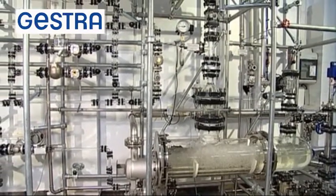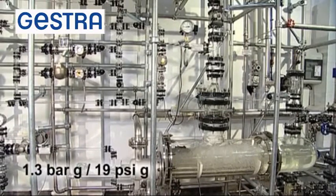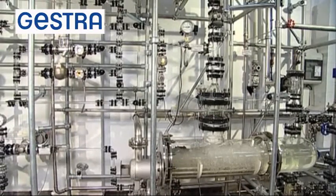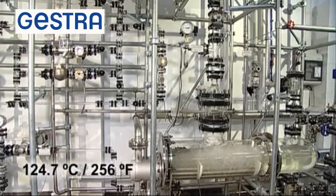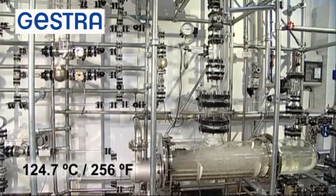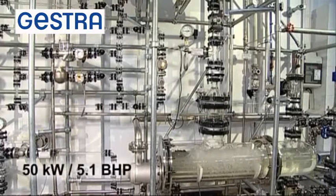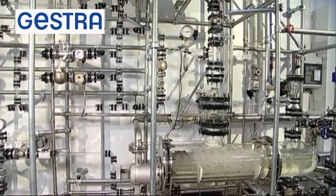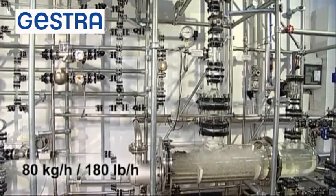The steam system consists of a secondary steam generator with a service pressure of 1.3 bar G, corresponding to a saturation temperature of 124.7 degrees centigrade. The capacity of the steam boiler is 50 kilowatts, which yields a steam flow rate of 80 kilograms per hour.